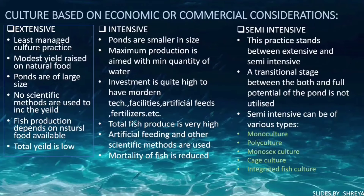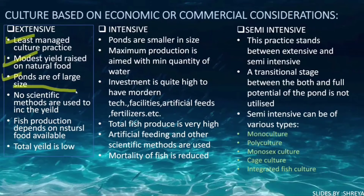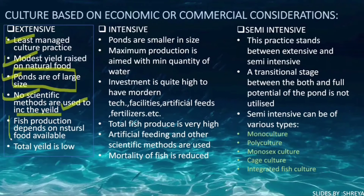In extensive culture, it is the least managed culture practice. A modest yield is raised on natural food. Ponds are of large size — this is the main point of extensive culture. No scientific methods are used, and fish production depends entirely on natural food available. As a result, total yield is low.